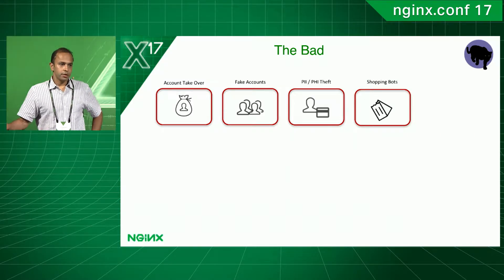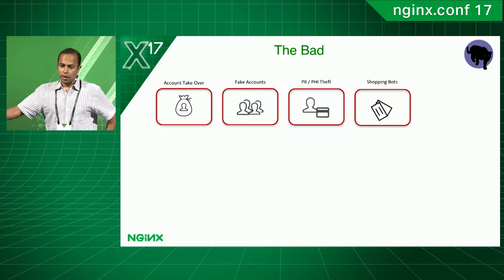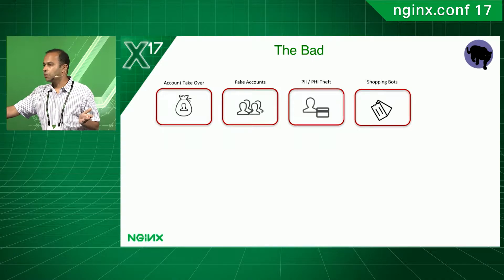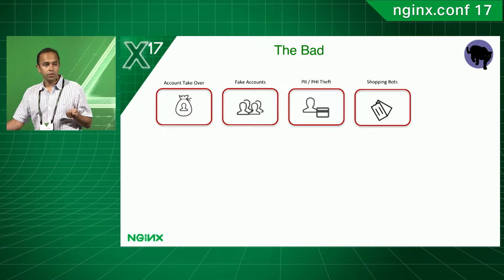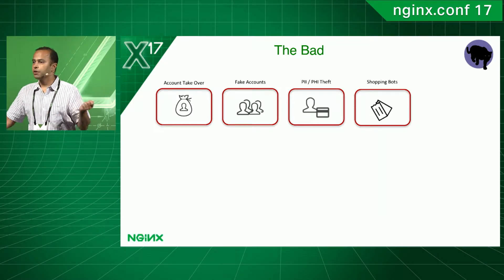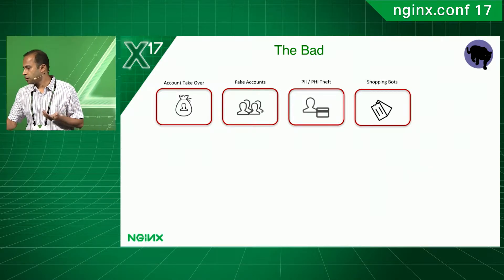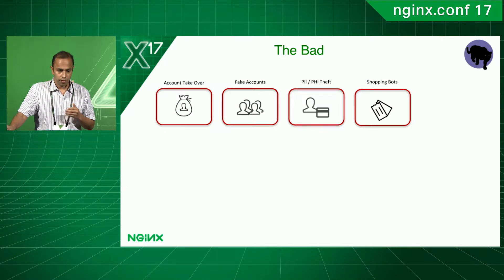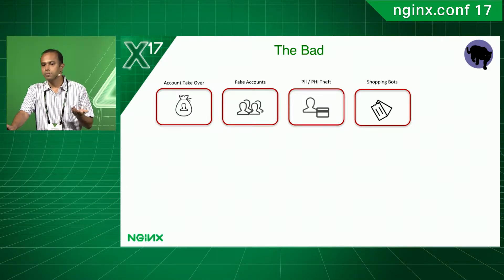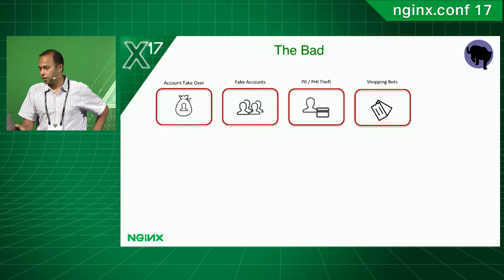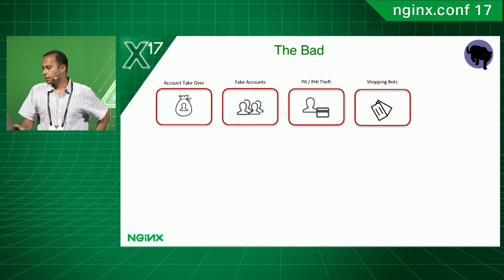Another kind is shopping bots. When limited-edition shoes or tickets to specific shows come out, these bots buy out the inventory and resell it in the secondary market at much higher prices. Most of your customers are then not able to access the inventory you planned to sell them.